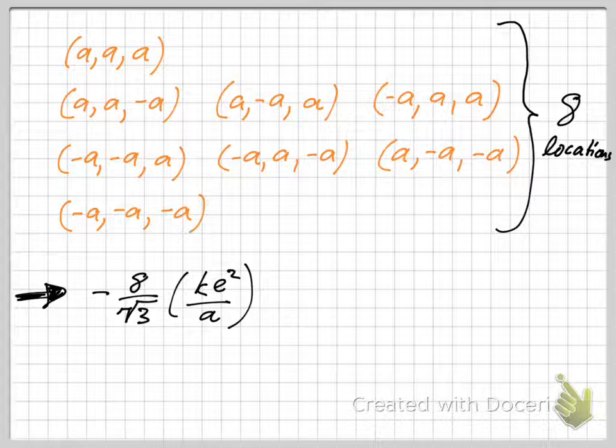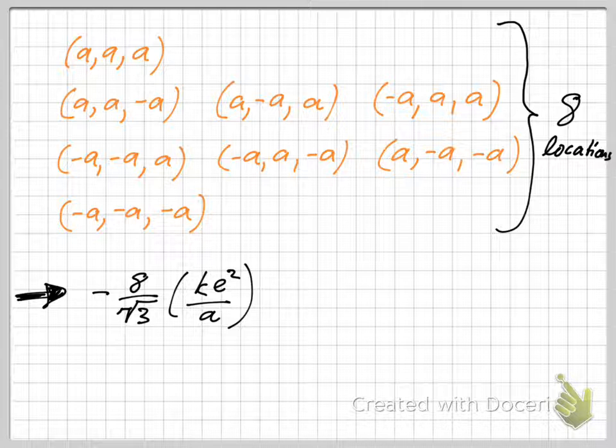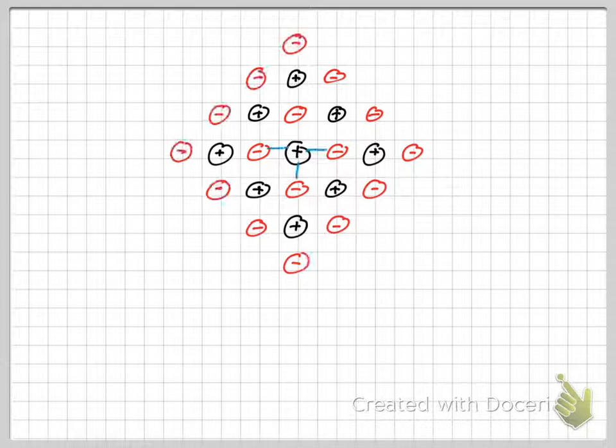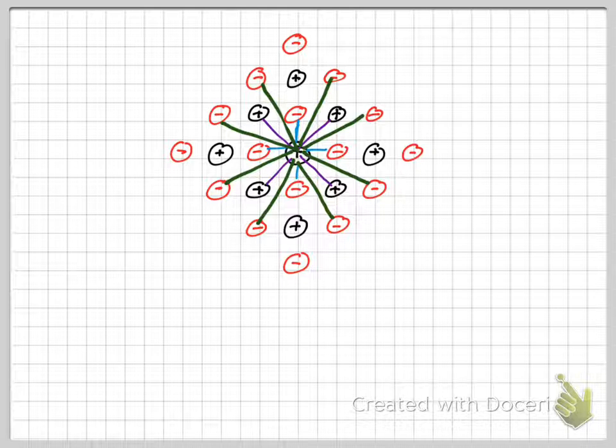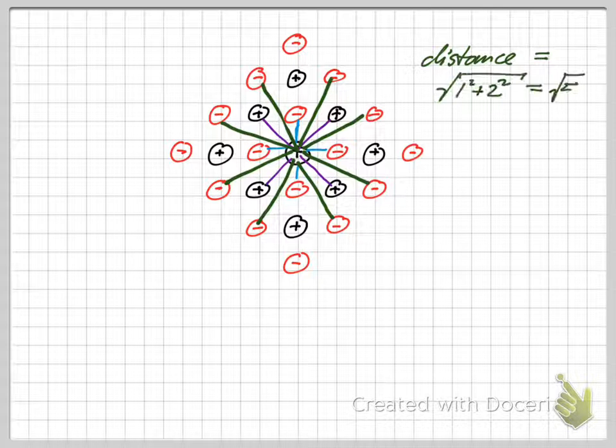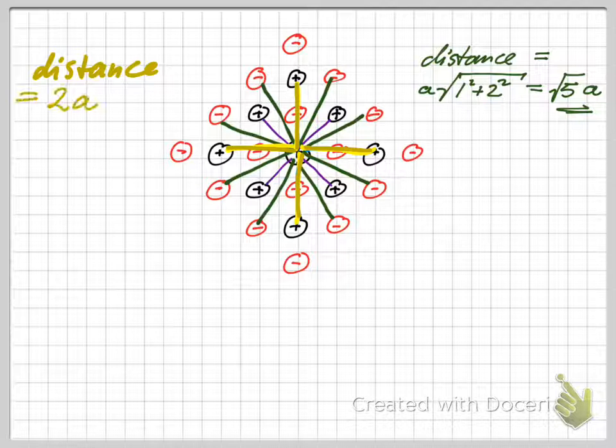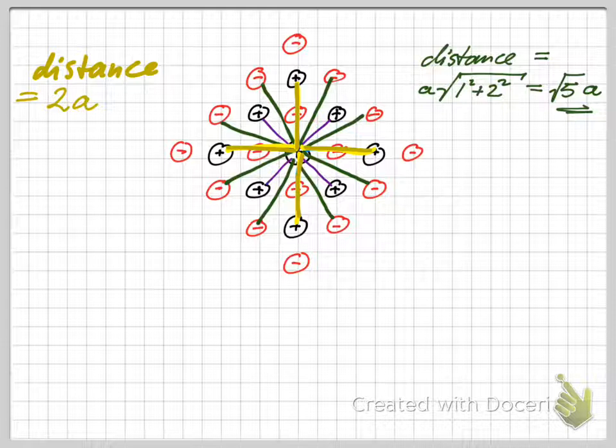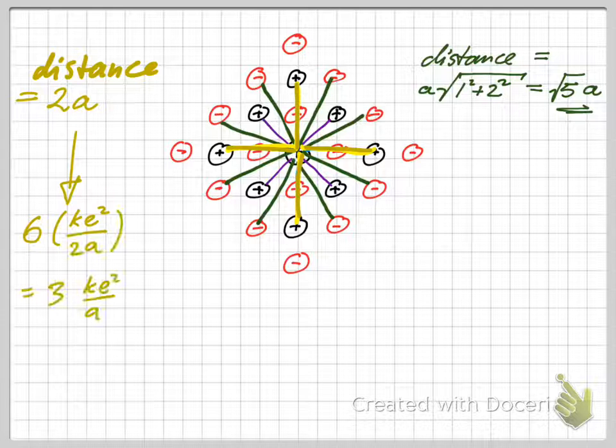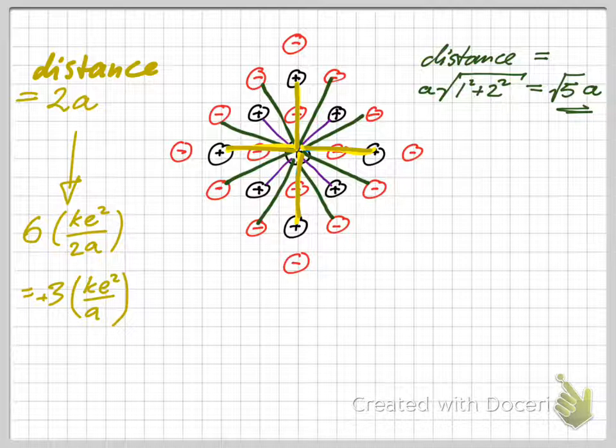Why is it a minus sign? Because it's an attractive energy. We're still not done because we now can go out even further. There are those positive sodium ions at a distance of two times a, and we can think about how many there are. In this case there are six, and so we get a contribution of three times the quantity ke squared over a.